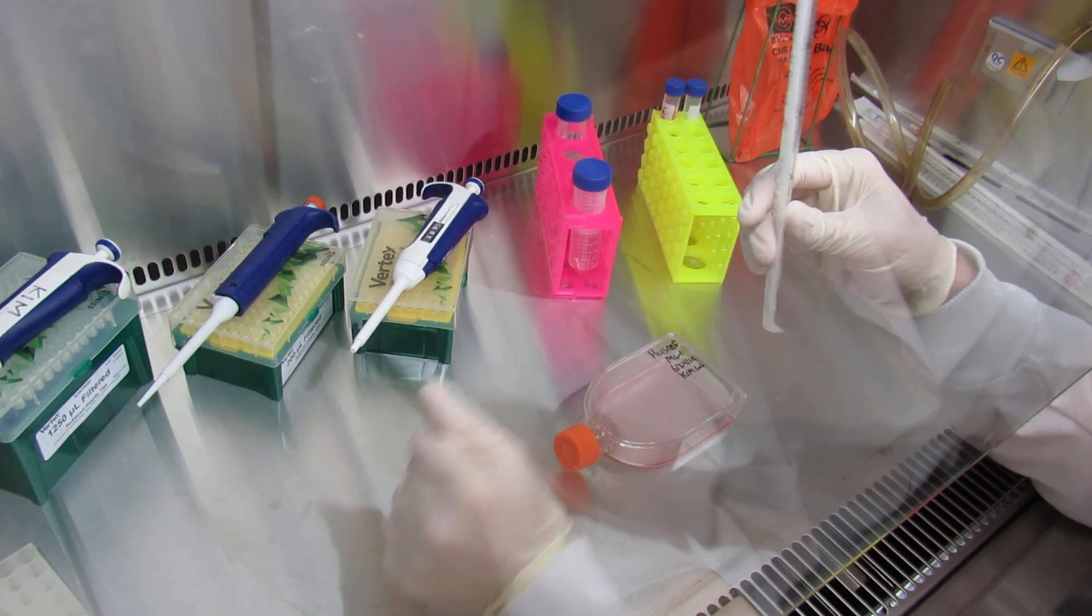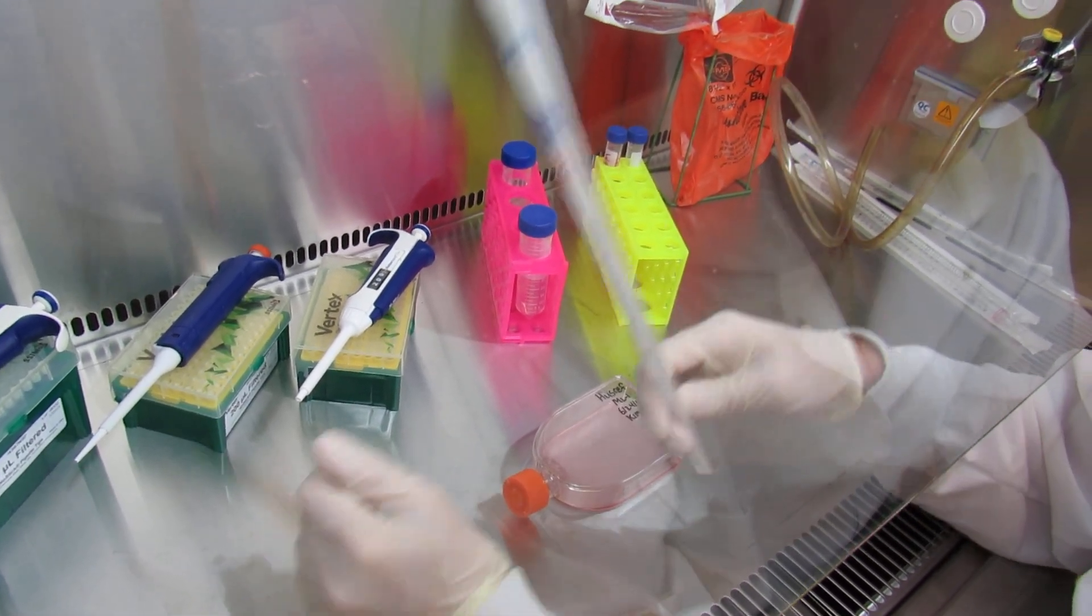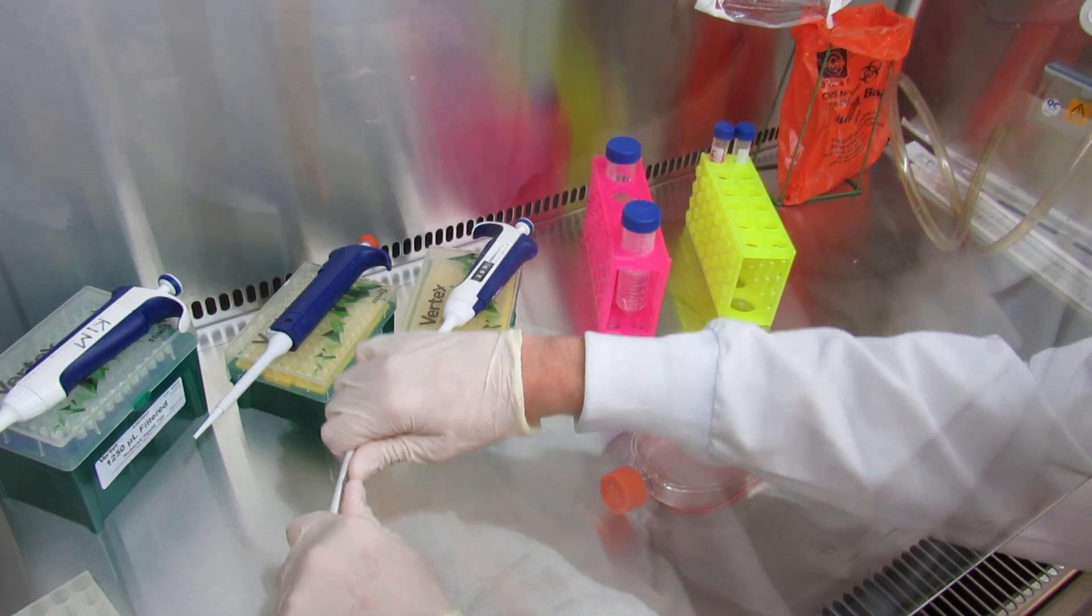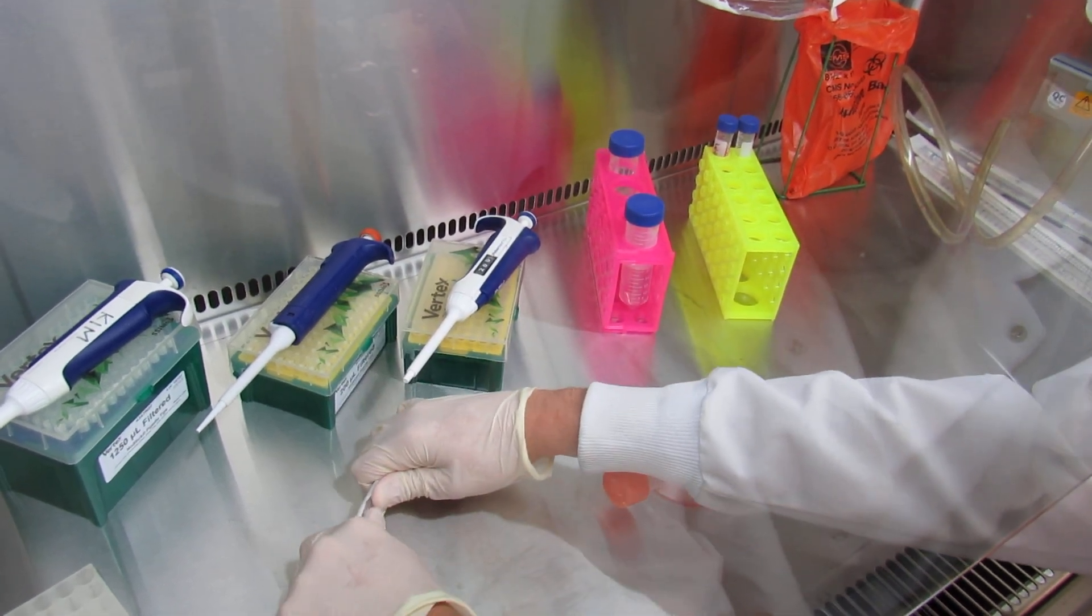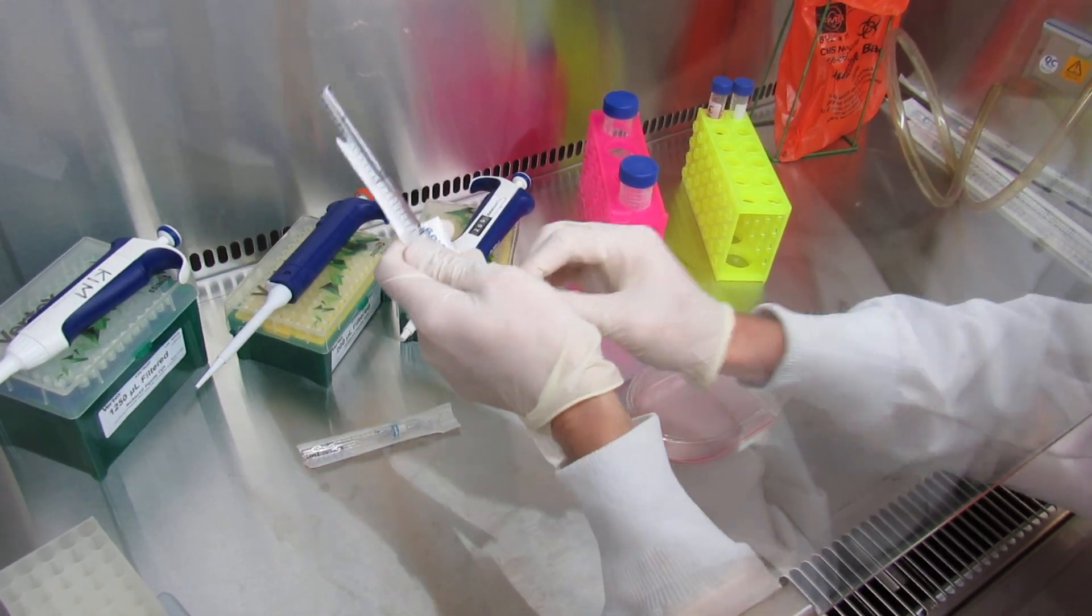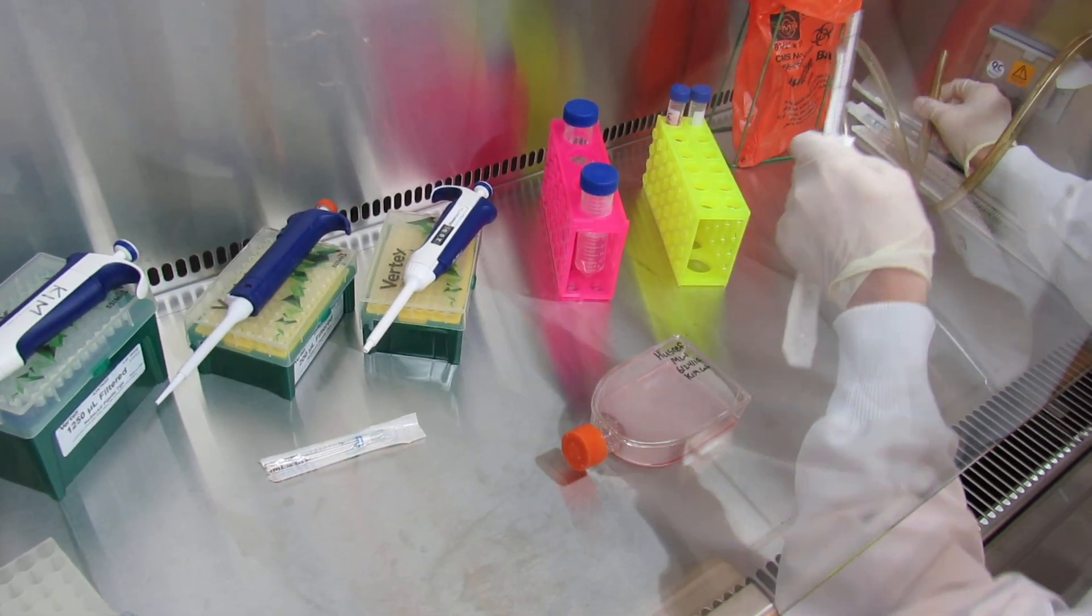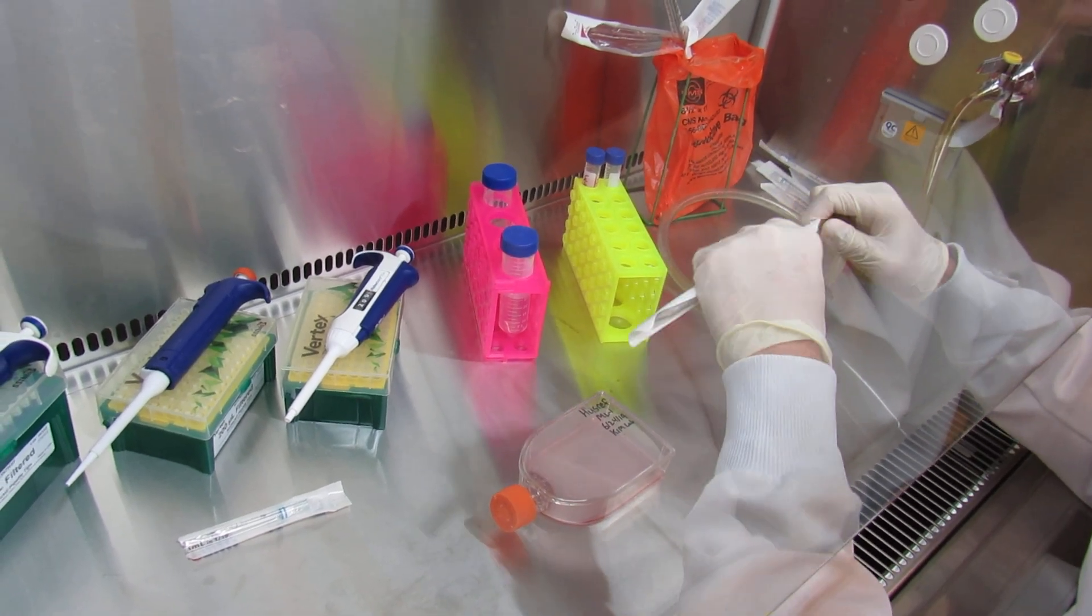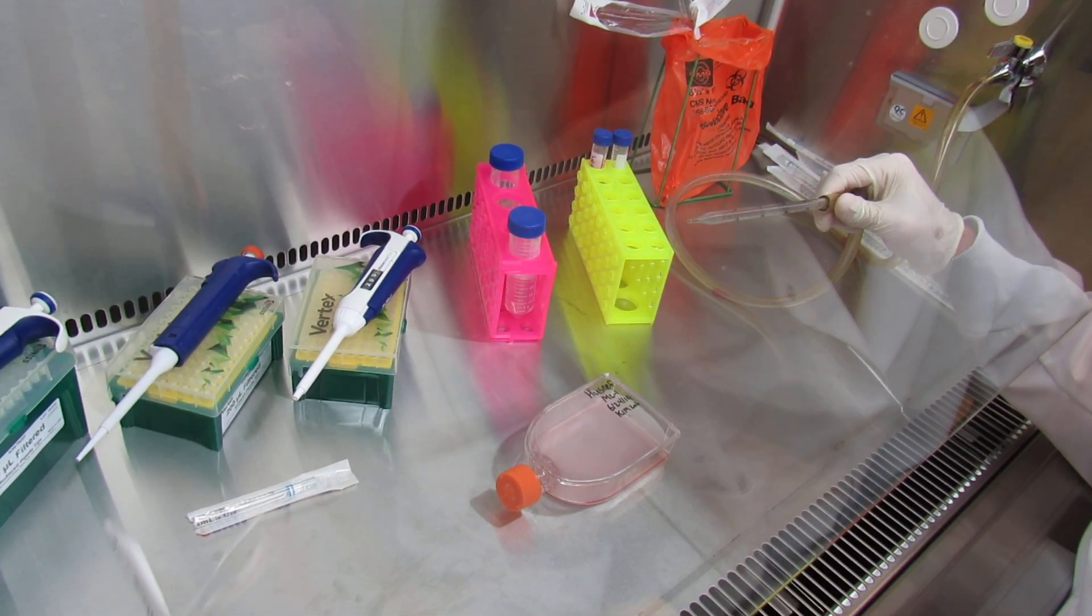Next, to use the vacuum, you'll take a 5 milliliter serological pipette tip, and you're going to snap it around here at the minus 2. Snap it in the corner, being mindful not to spray it towards yourself, and peel it back. You'll then take your vacuum hose and insert the end of the tip there.